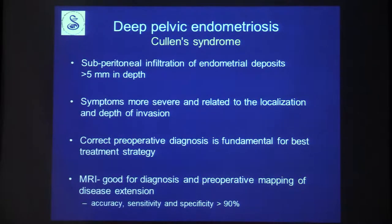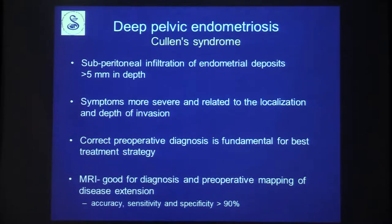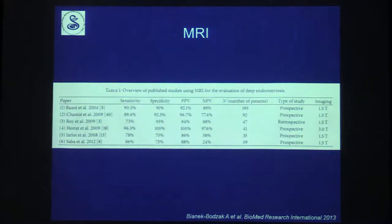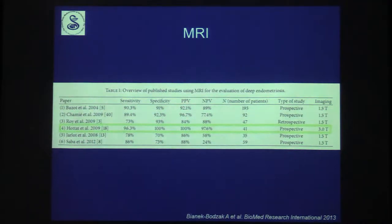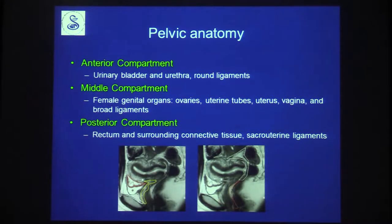Deep pelvic endometriosis is the infiltration of endometrial deposits more than five millimeters into the surrounding organs. Symptoms are more severe and relate to both localization and depth of invasion. Correct preoperative diagnosis is essential to identify all lesions, and MRI achieves accuracy, sensitivity, and specificity of over 90%. Published data show even more promising results at 3T.